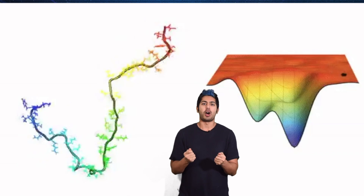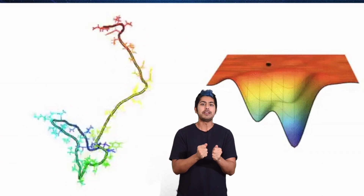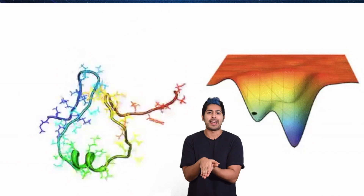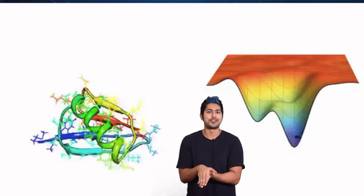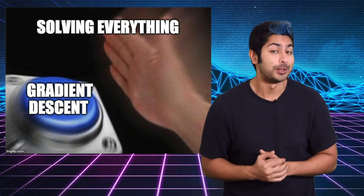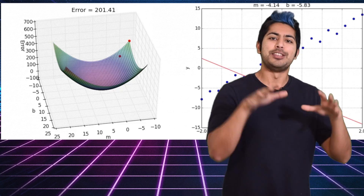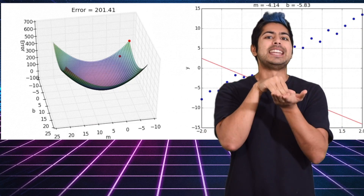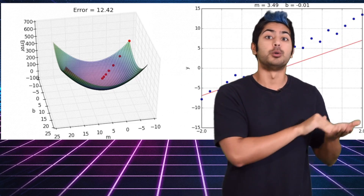We can visualize this folding process using an energy landscape. As the protein folds, think of it like a ball rolling down a pit — it navigates around bumps, which are paths that require extra energy, until it finds the point with the least energy. Does this process sound familiar? It's similar to how neural networks learn via gradient descent — they try to find the network values that will minimize not energy, but an error value. And as it turns out, this is the optimization strategy that AlphaFold uses.